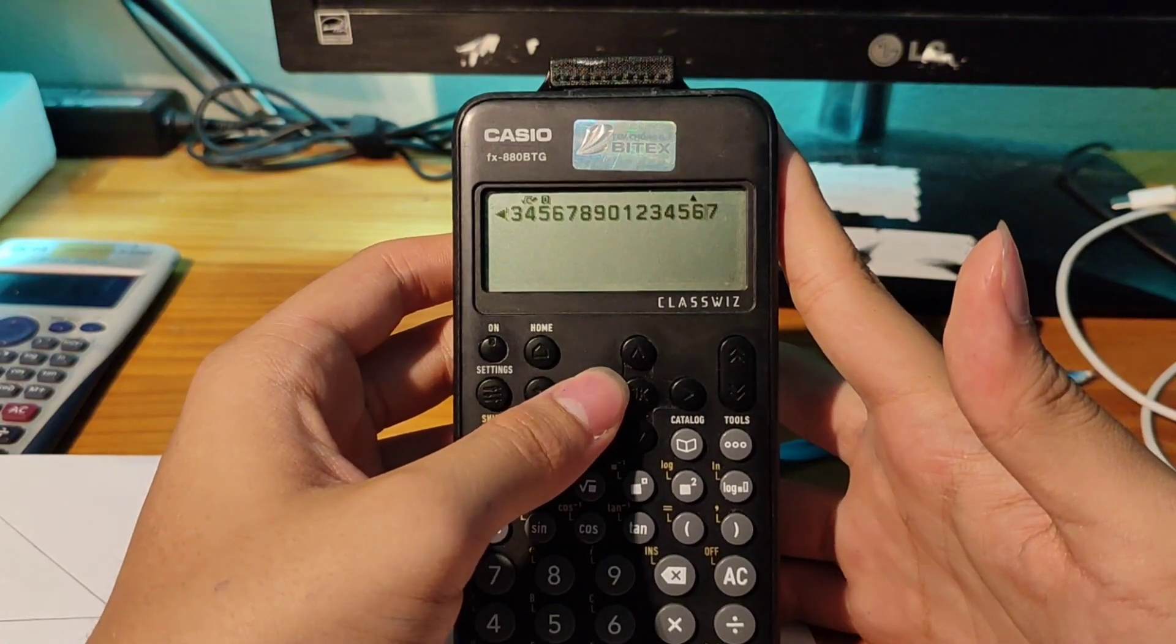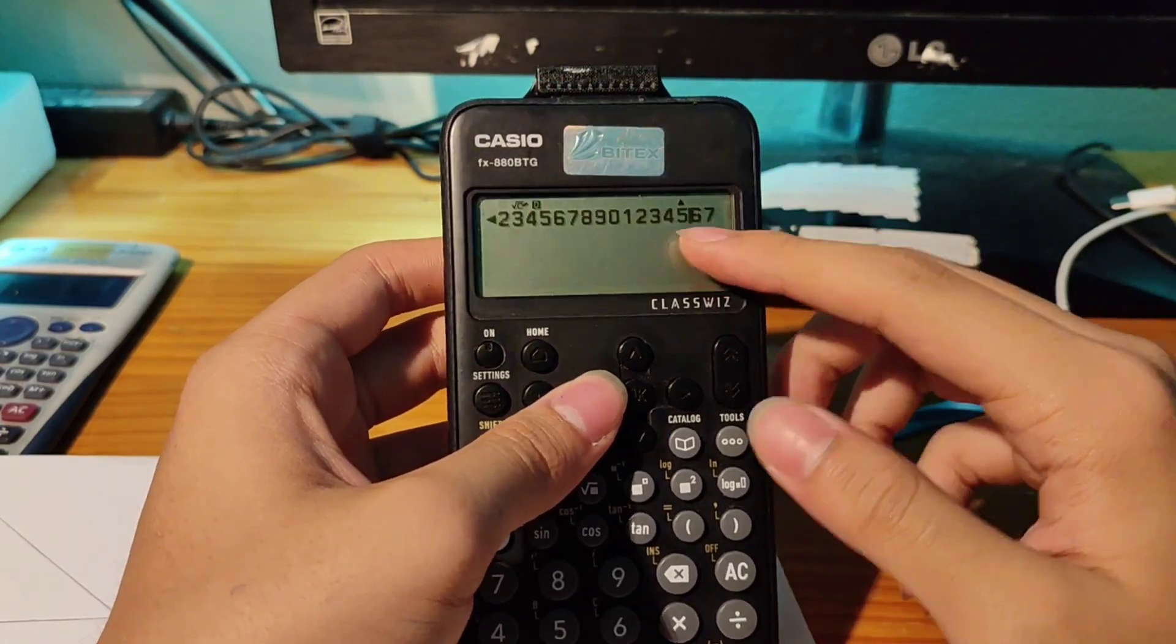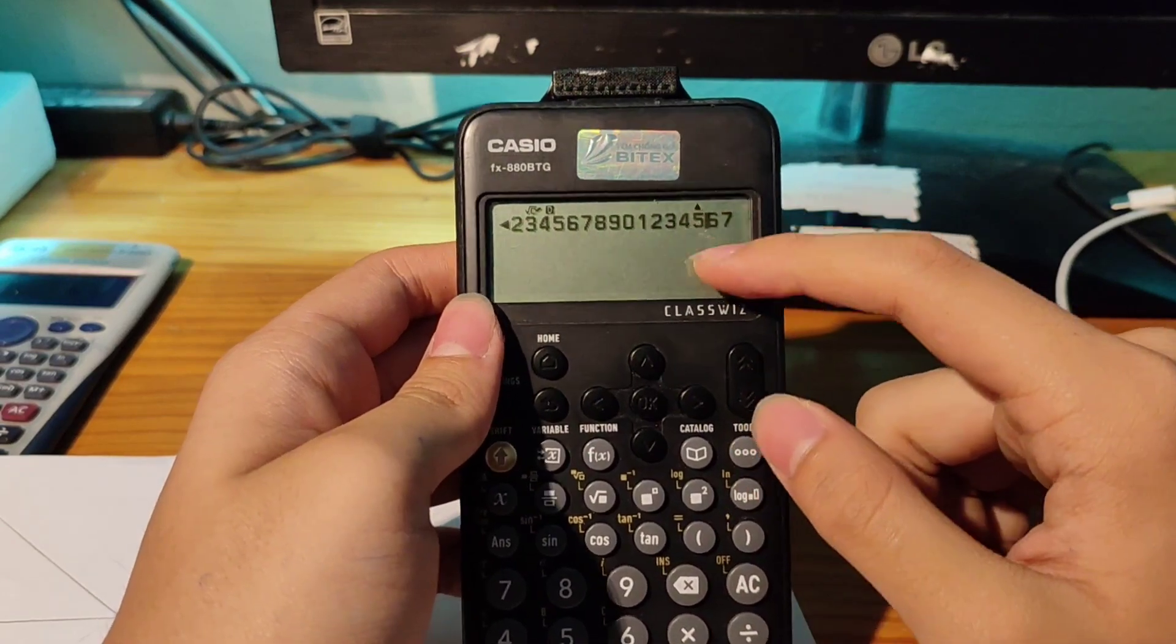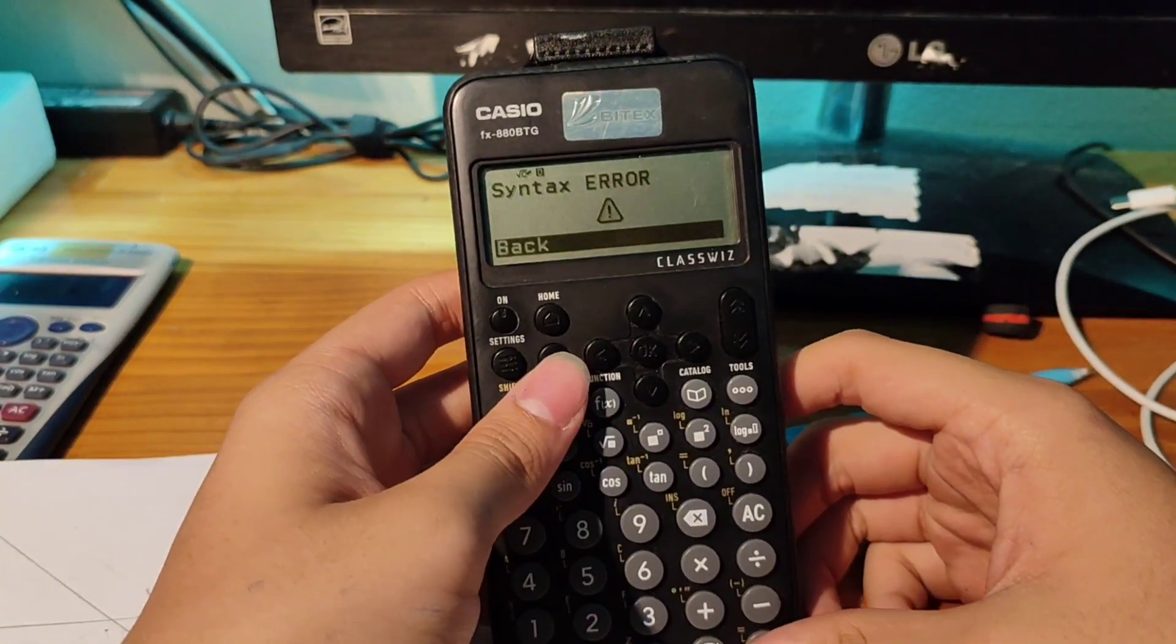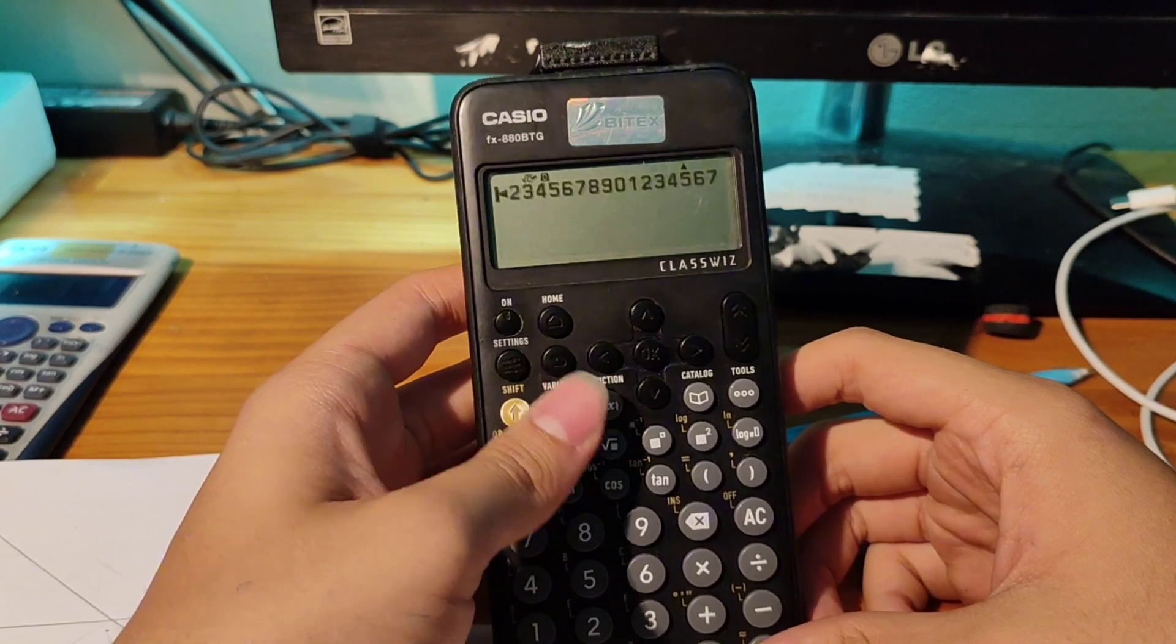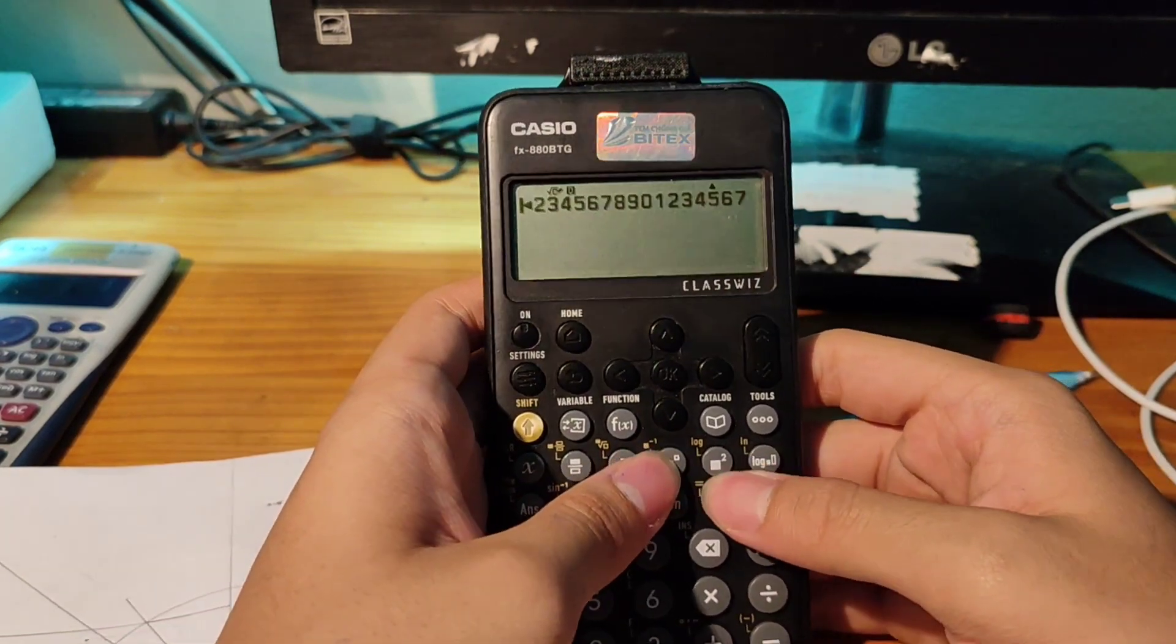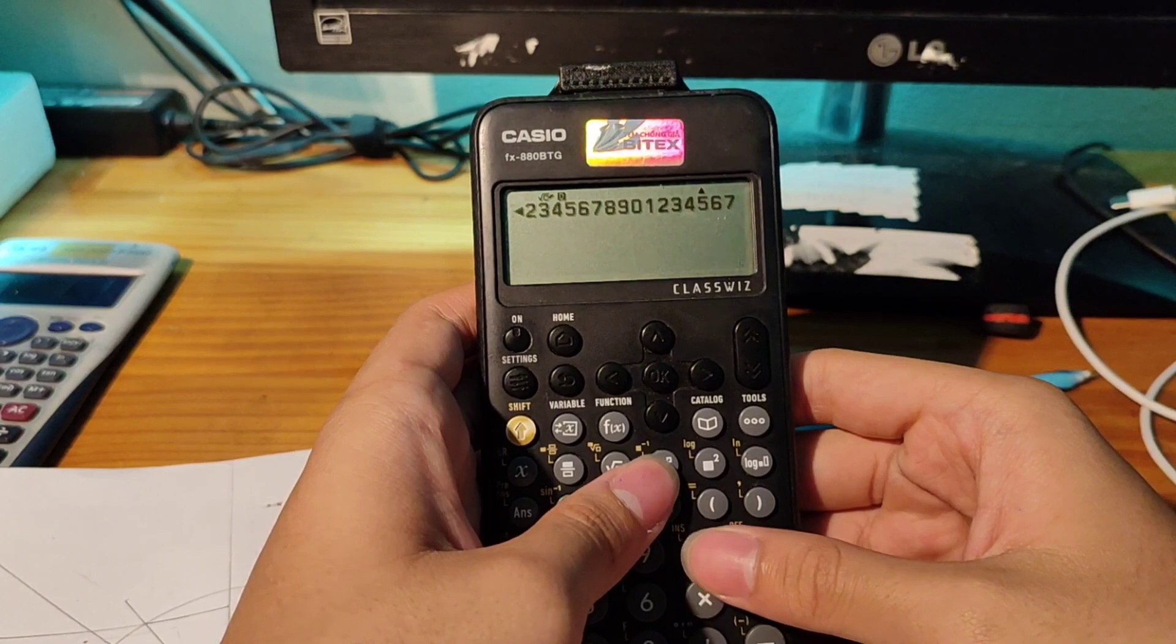Then, you press two times left to get this page up, two times left. You press equal, back, square, logarithm, and this one.